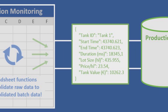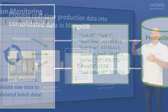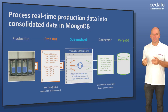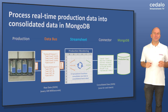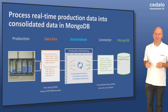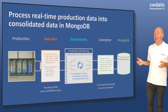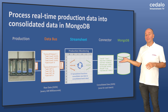For each batch the StreamSheet writes a record to a MongoDB database. The record contains the start time, the duration, the size, and the value of each batch — all calculated by simple spreadsheet formulas in the sheet. At the end the database will contain as many records as tanks have been filled up.